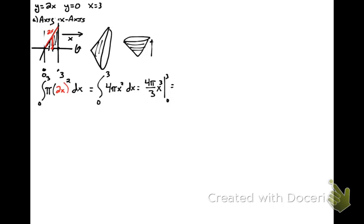36 pi minus 0 for a grand total of 36 pi units cubed. Because it's a volume, so they have to be cubic units, whatever they happen to be. So that's part A.